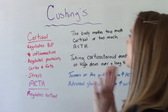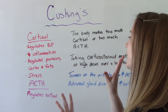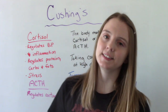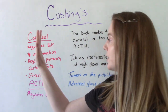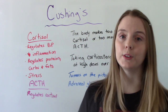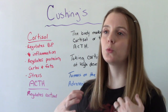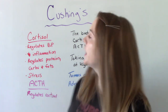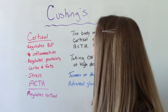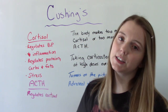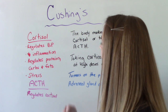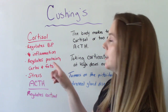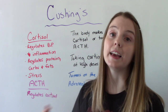Before we can understand Cushing's Syndrome, we have to understand the role of cortisol and ACTH. Cortisol does several things in the body. It's what our body uses in response to stress. It helps to regulate our blood pressure, decrease inflammation, and also regulates proteins, carbs and fats in turning them into energy.